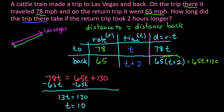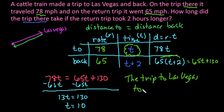And you always want to go back and look at your chart. Remember that what we were looking for initially was this value. If it asked for the trip back or the time back, we would have to plug this in and do the 10 plus 2. So the trip to Las Vegas took 10 hours.